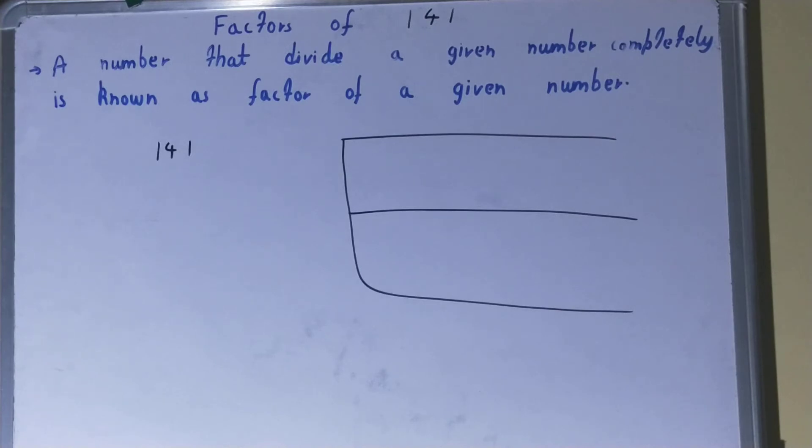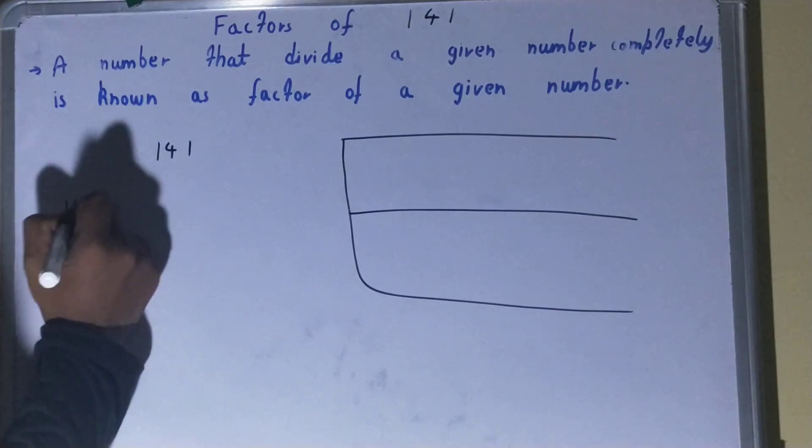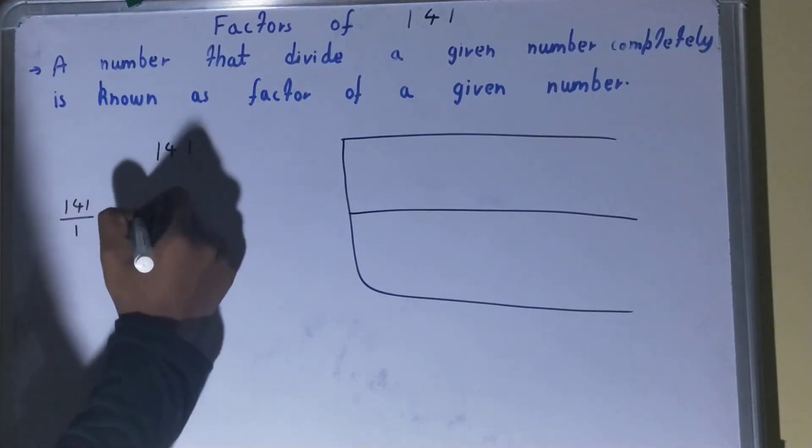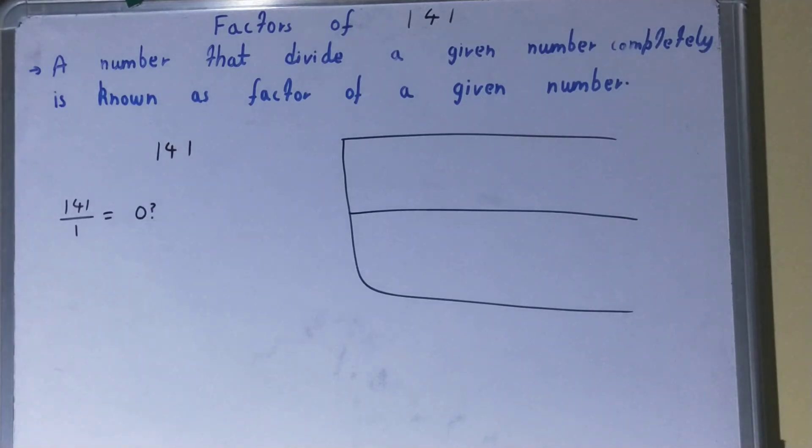That is 1. Divide the number 141 by 1. Will you get the remainder as zero on performing division? The answer is yes. On performing division you will get the remainder as zero. So because you will get the remainder as zero on performing division, you can say 1 is the factor of 141.